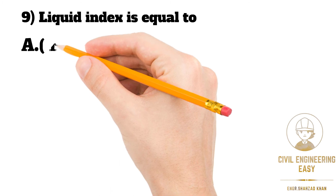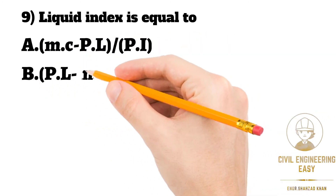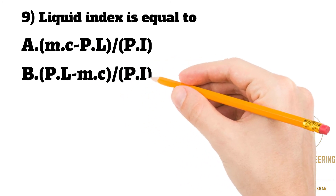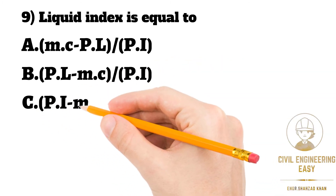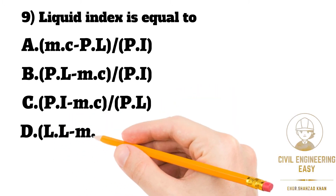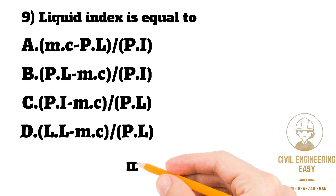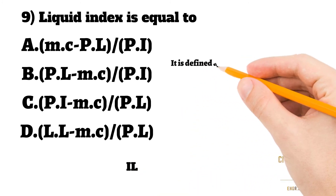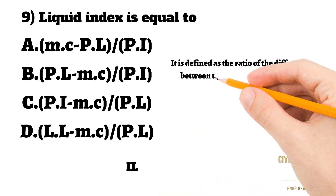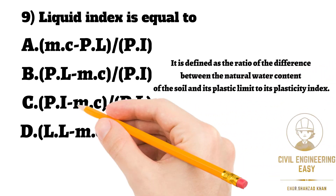In MCQ number nine, liquid index is equal to: option A is moisture content minus plastic limit divided by plasticity index, option B is plastic limit minus moisture content divided by plasticity index, option C is plasticity index minus moisture content divided by plastic limit, option D is liquid limit minus moisture content divided by plastic limit. The liquid index IL is defined to understand the consistency of a soil. It is defined as the ratio of the difference between the natural water content of the soil and its plastic limit to its plasticity index.